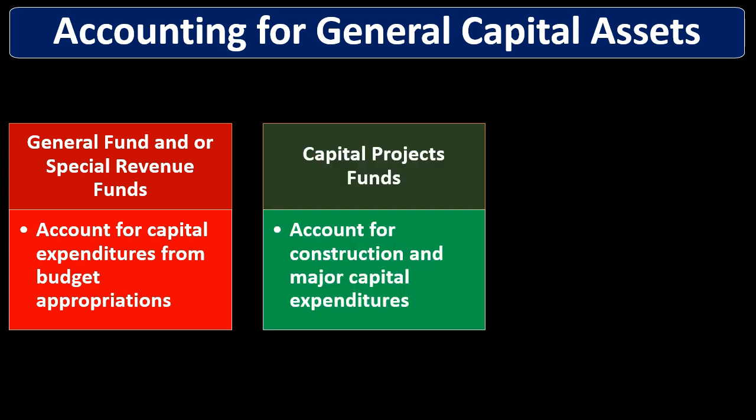The capital projects fund is used when putting together a large construction process — building a bridge, a building, or similar major capital expenditures. The capital projects fund is also a governmental-type fund on a modified accrual basis. We use it to track the expenditures related to capital projects, recording the flow of activity within the fund rather than recording the building or capital asset itself as an asset.